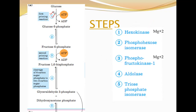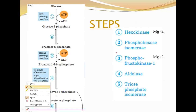Another common mistake students make is writing 'glucose is converted to glucose-6-phosphate' — that is a very wrong habit. Please change it. You have to mention what is happening: 'glucose is phosphorylated by hexokinase to glucose-6-phosphate.' That is how the wording should be constructed. So glucose gets phosphorylated to glucose-6-phosphate by the enzyme hexokinase, which requires magnesium or manganese as a cofactor. This is the first step.